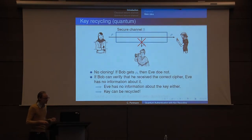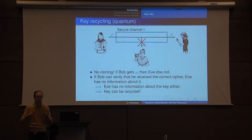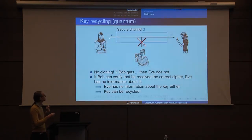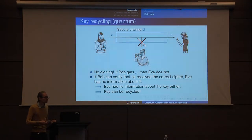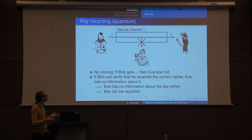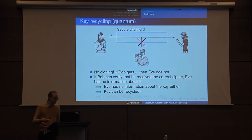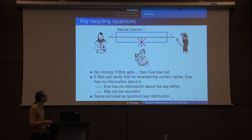Suppose we design a scheme such that Bob verifies he receives the correct cipher — note that this is not the same thing as receiving the correct message, so it's a slightly stronger requirement. If Bob receives the correct cipher, so he receives exactly what Alice sent, then Eve has no information about the cipher at all. In particular, she has no information about the key because the key is kind of embedded in the cipher. So Eve knows nothing about the key, and therefore the key can be recycled.